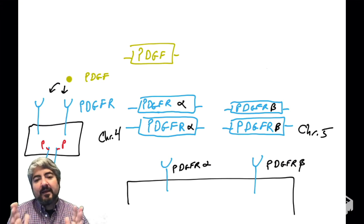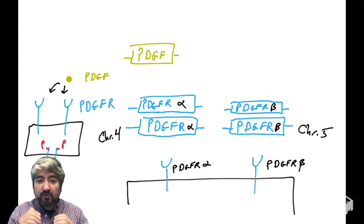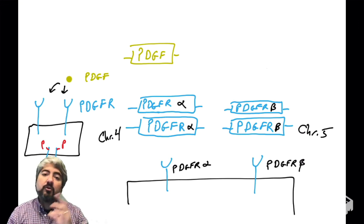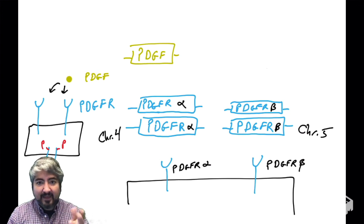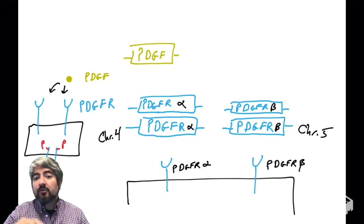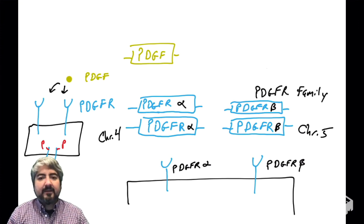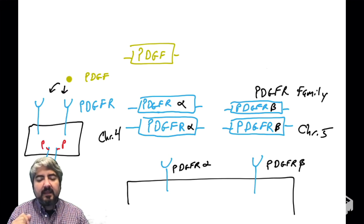These are not alleles — they're not different versions of the same gene, they're whole separate genes. The PDGFR alpha gene is on chromosome four; you have two copies of that, maternal and paternal. The PDGFR beta gene is on chromosome five, and again you have two copies of that, maternal and paternal. So this is the PDGFR family — two different versions of the gene that are slightly different.